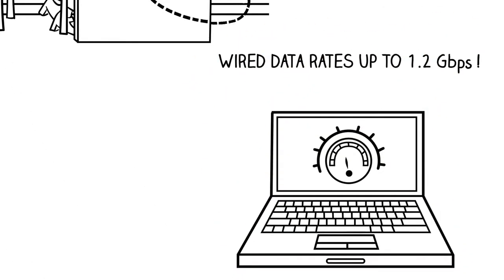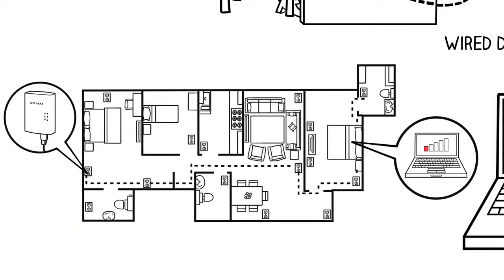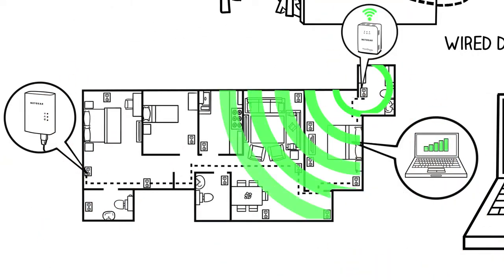You can enjoy wired data rates up to 1.2 gigabits per second, or use a Powerline device with built-in Wi-Fi to create a new, stronger Wi-Fi connection in any room.